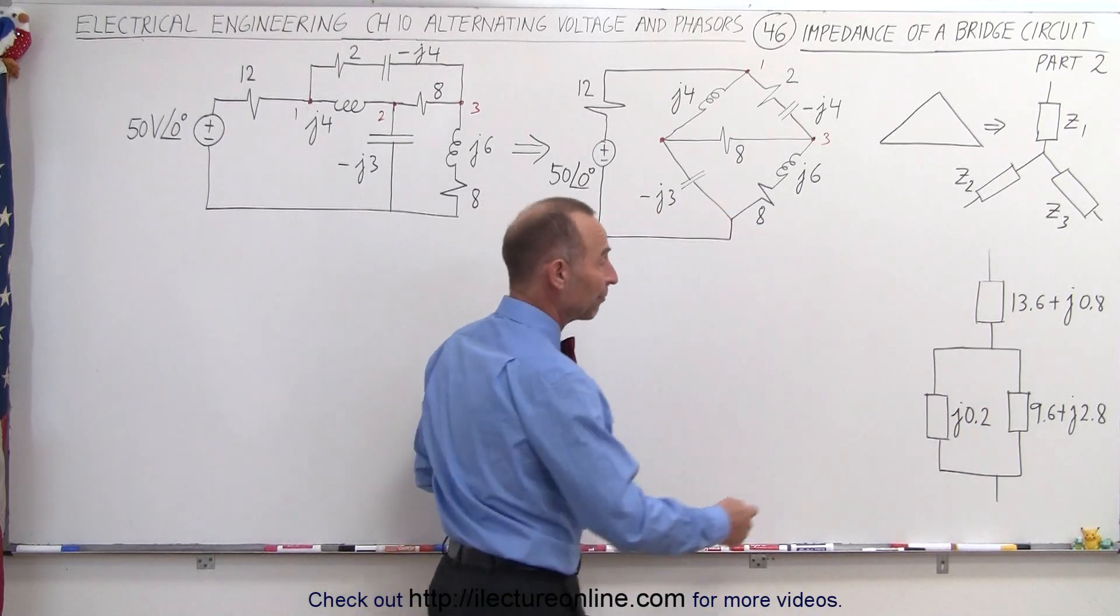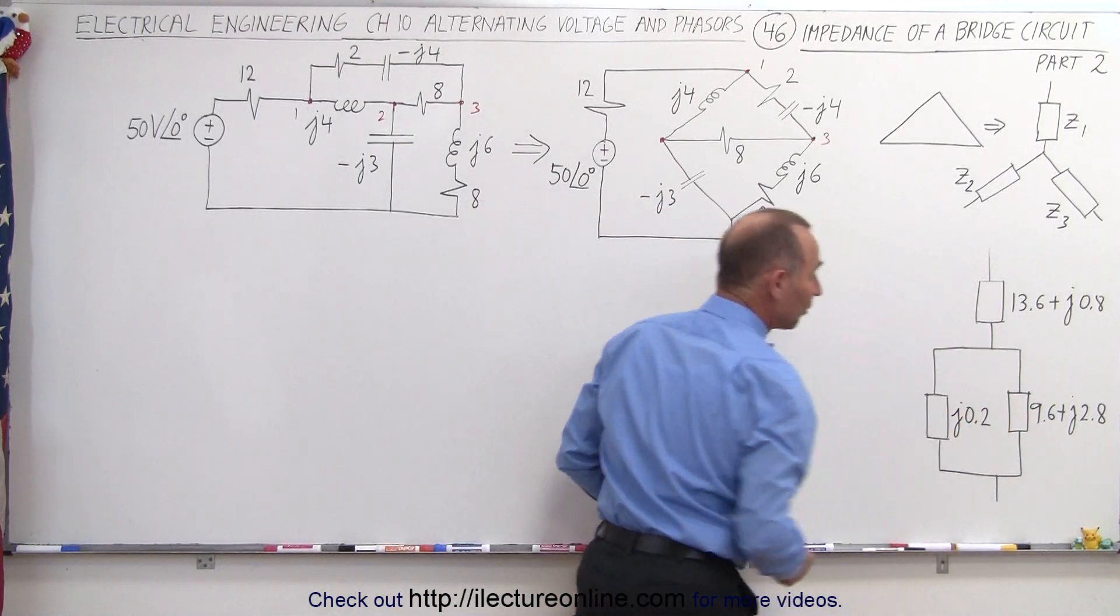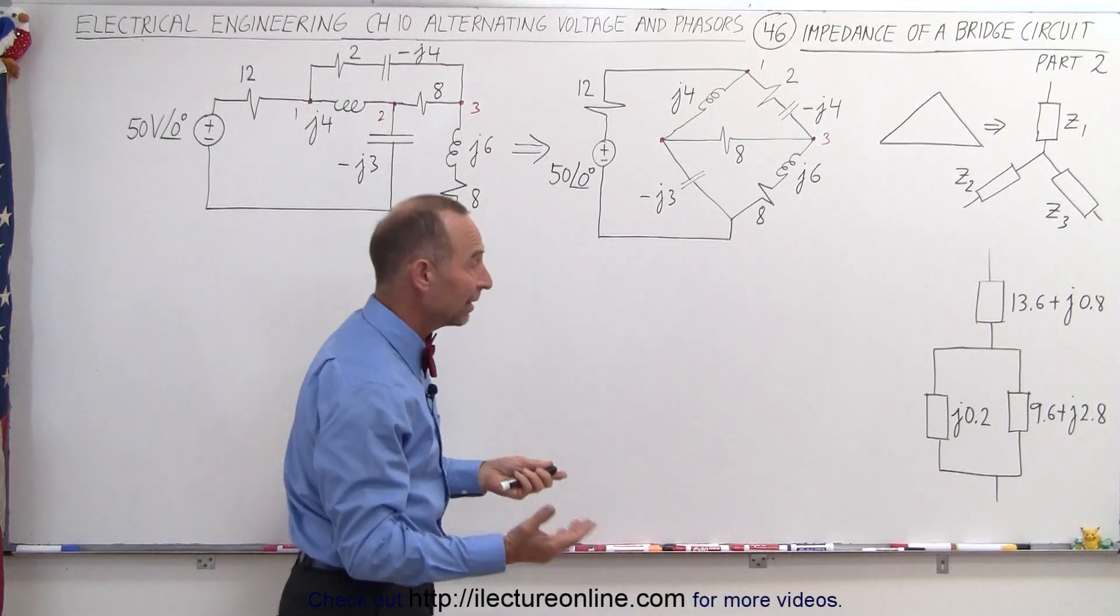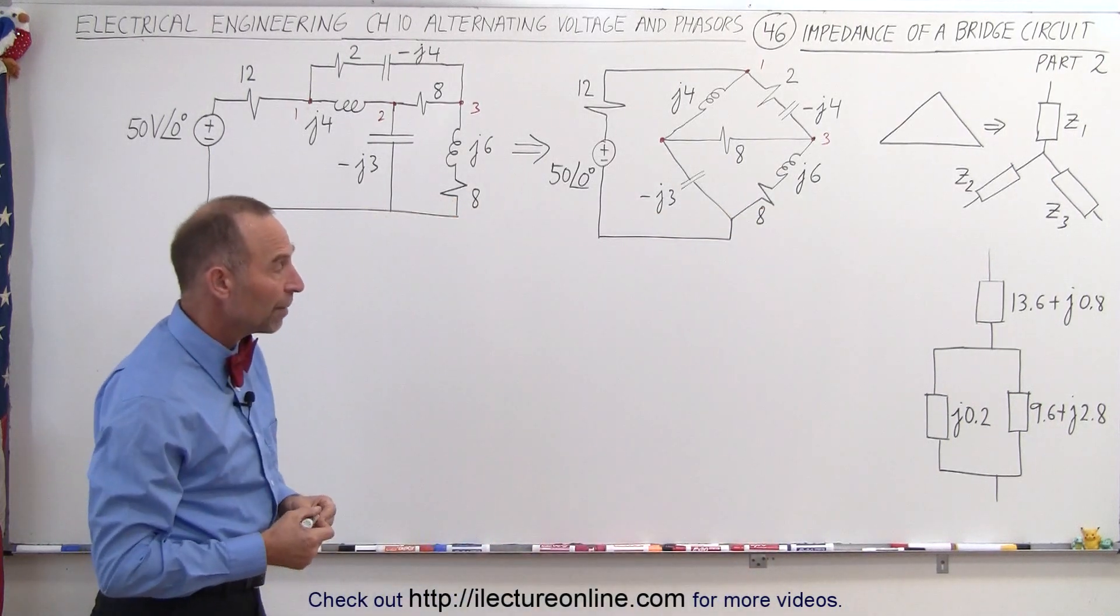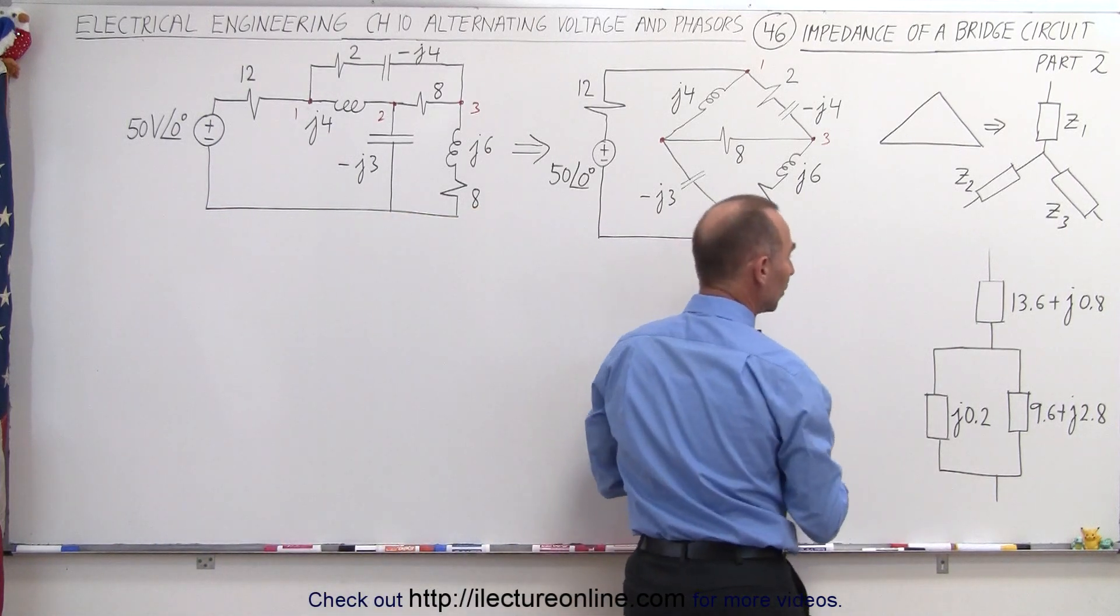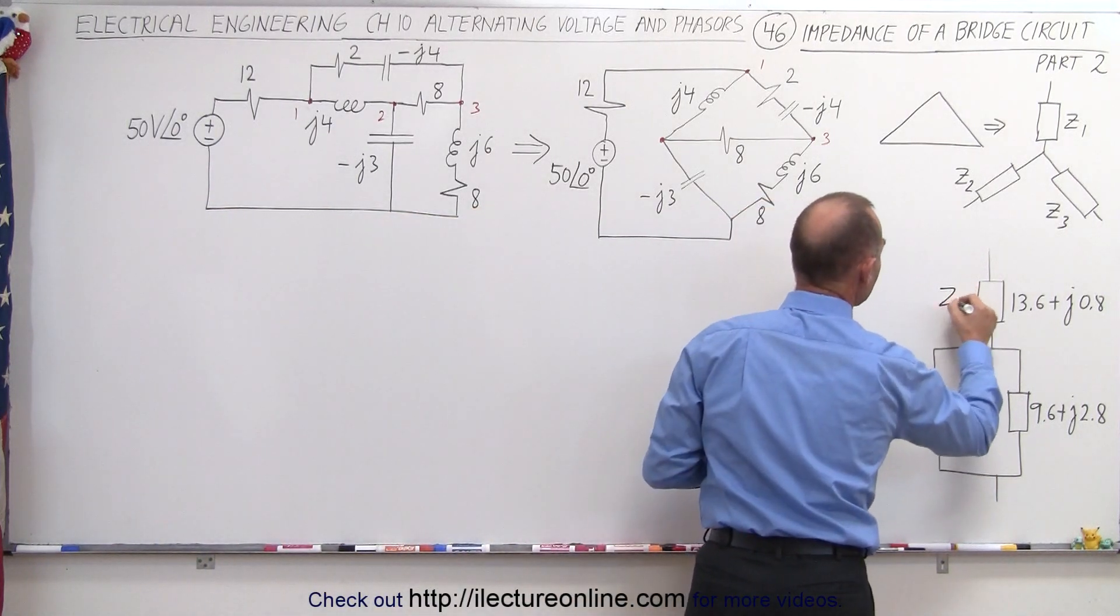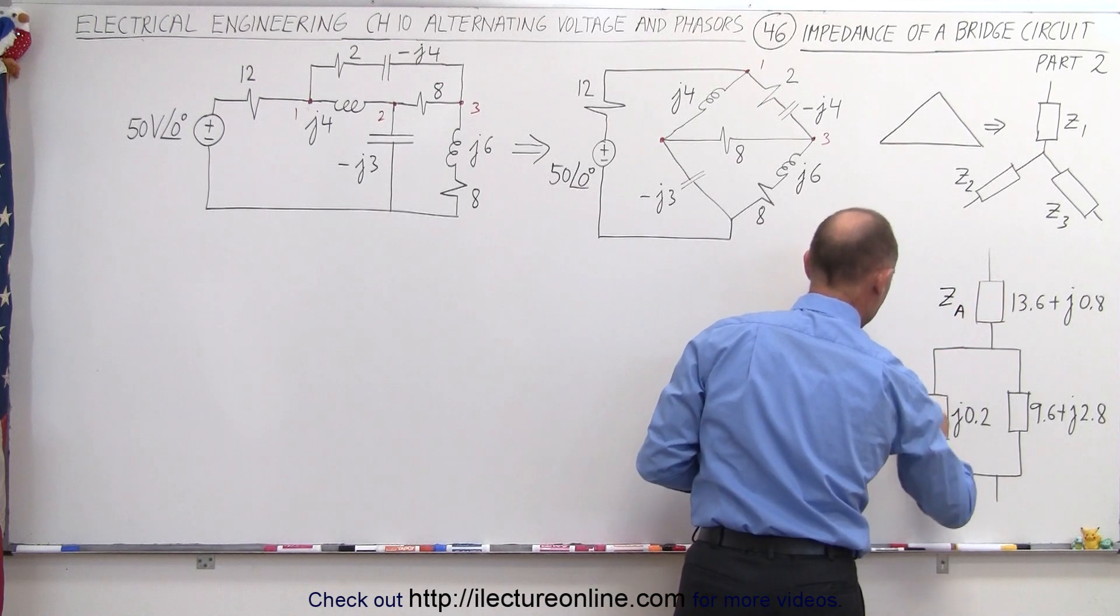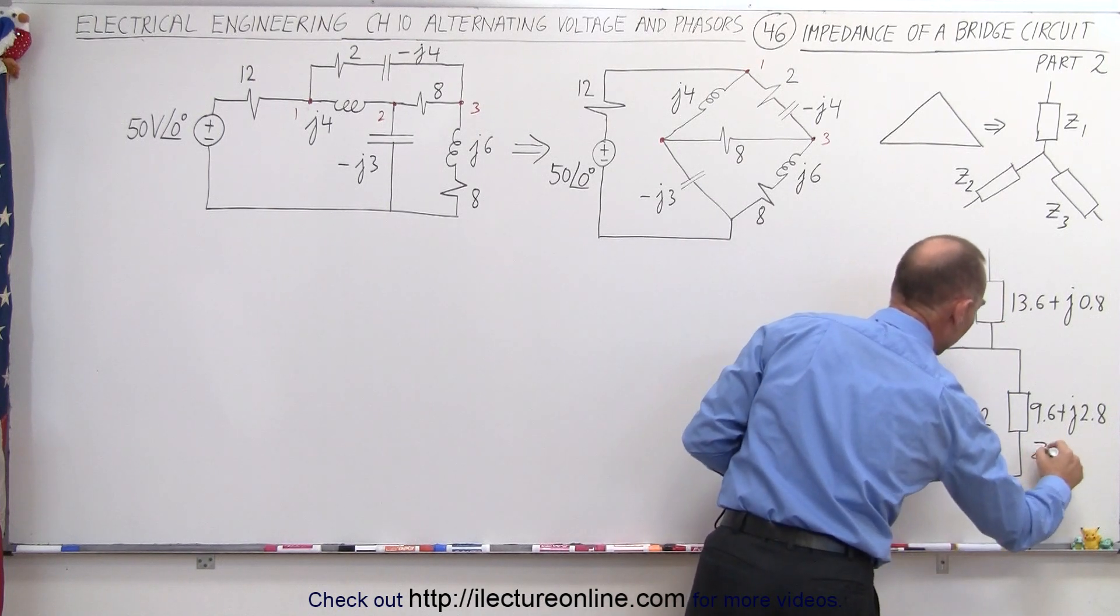We'll continue now by first combining these two. Since they're in parallel, we're going to have to find it by taking the product over the sum. Let's call this ZA, ZB, and ZC.